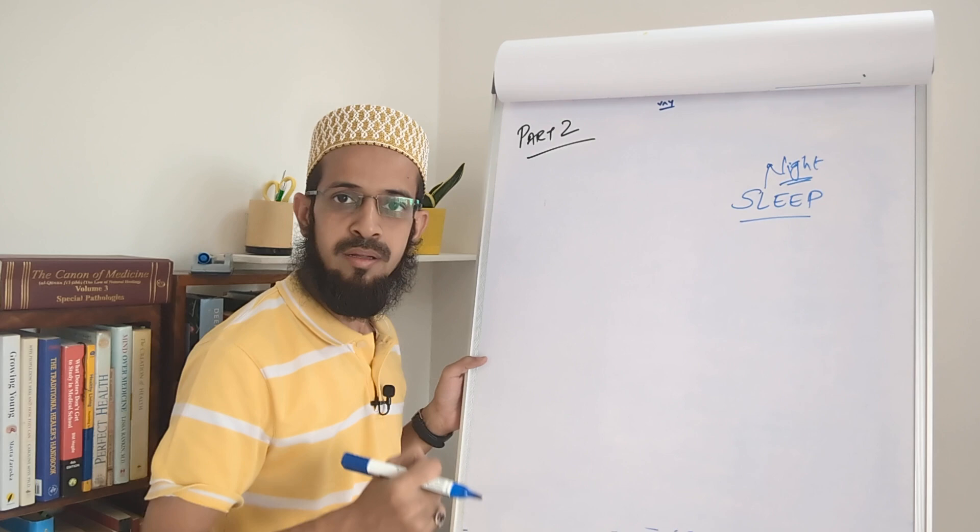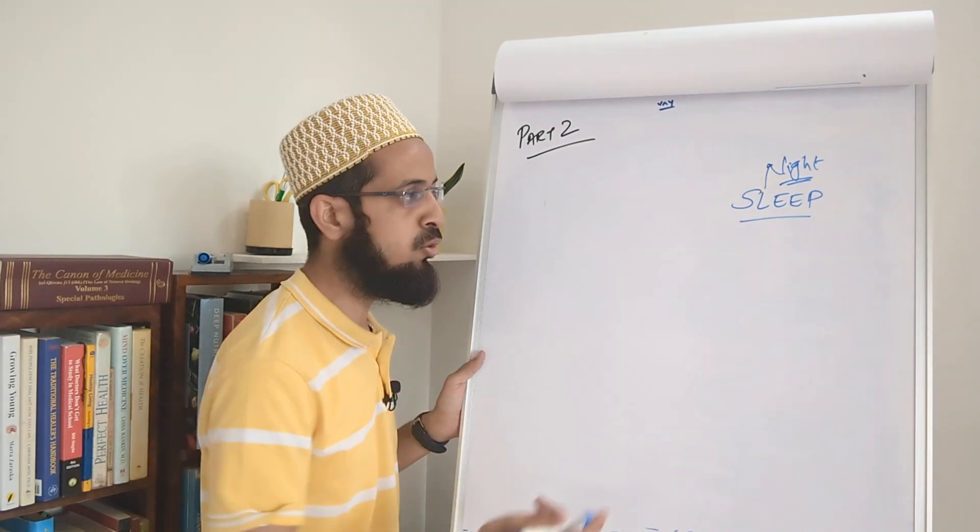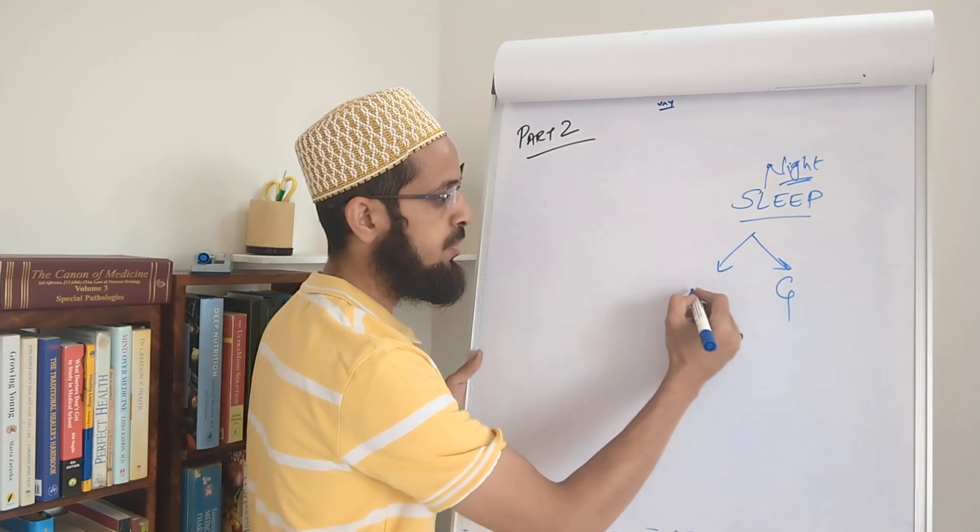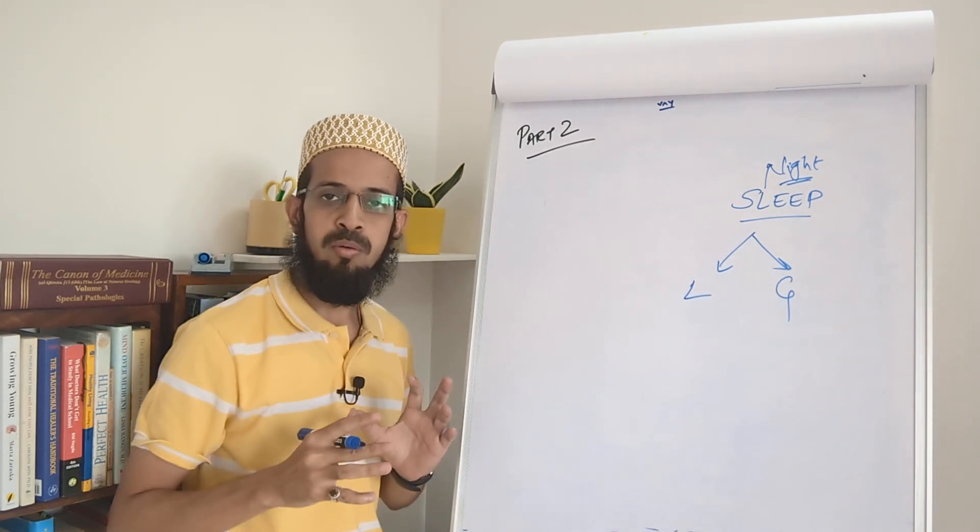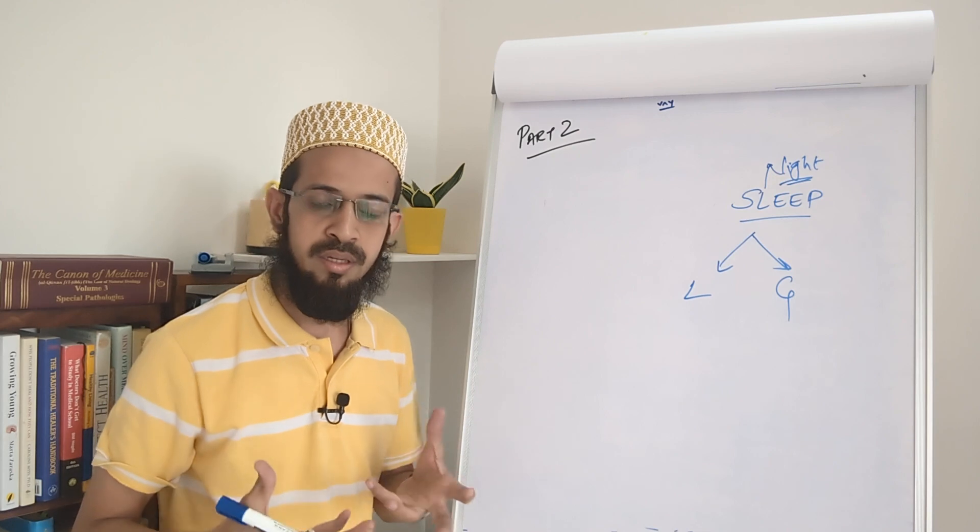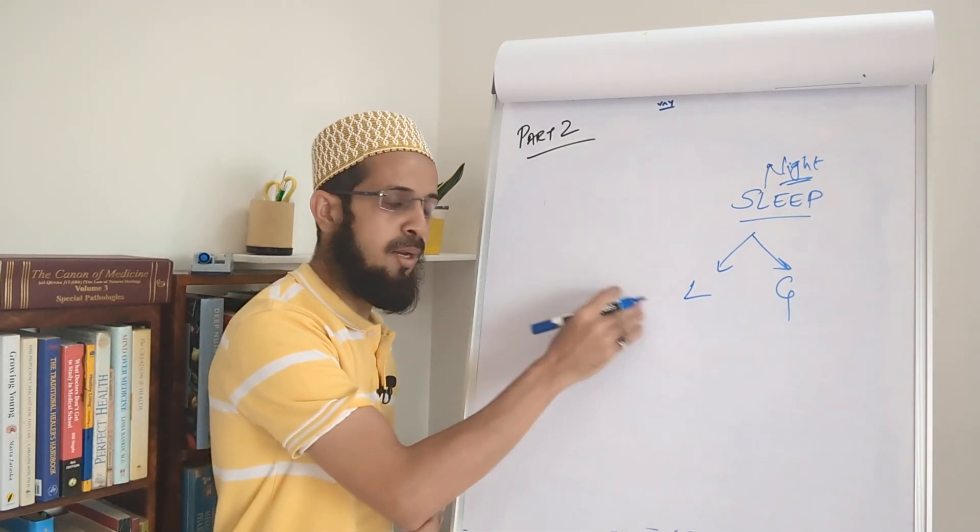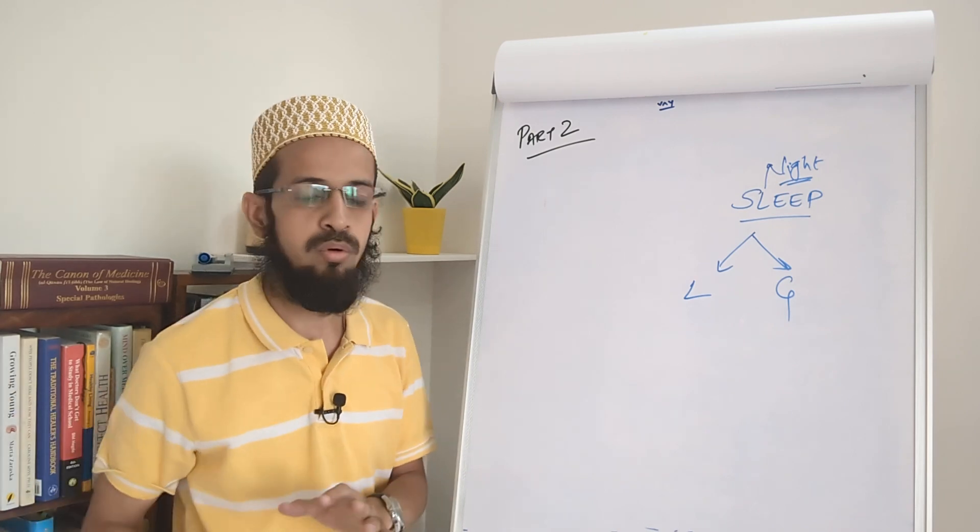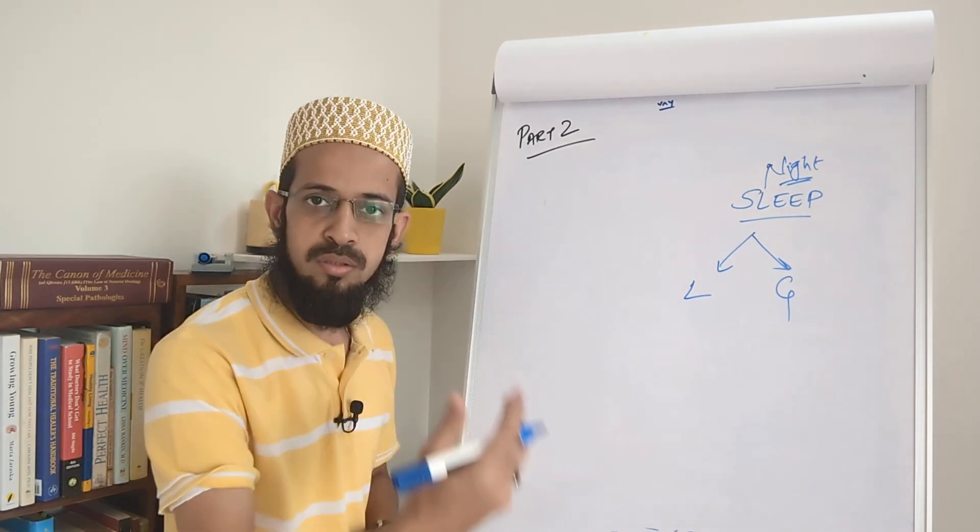Now when your sleeping pattern is out of balance, the hunger hormones - we have two hunger hormones which is ghrelin and leptin. So ghrelin is a hormone which tells you that you are hungry, you start eating food, and leptin tells your body you have had enough of food and you stop eating food.